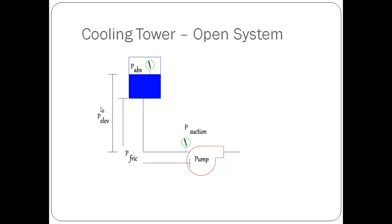Second term: P elevation. This pressure identifies the elevation difference between the top surface of the liquid and the pump centerline. This value can be positive or negative and is measured in feet of head.